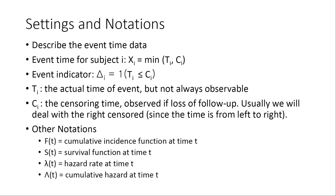There are two cases: the first is loss to follow-up, where the subject quits the study and you cannot get further information. The second is administrative censoring, which refers specifically to the situation where at the end of the study's follow-up time you still cannot observe an event for that subject. The event is defined based on the study — for example, if the event is mortality and the subject is still alive at the five-year follow-up, that five years is the administrative censoring time.